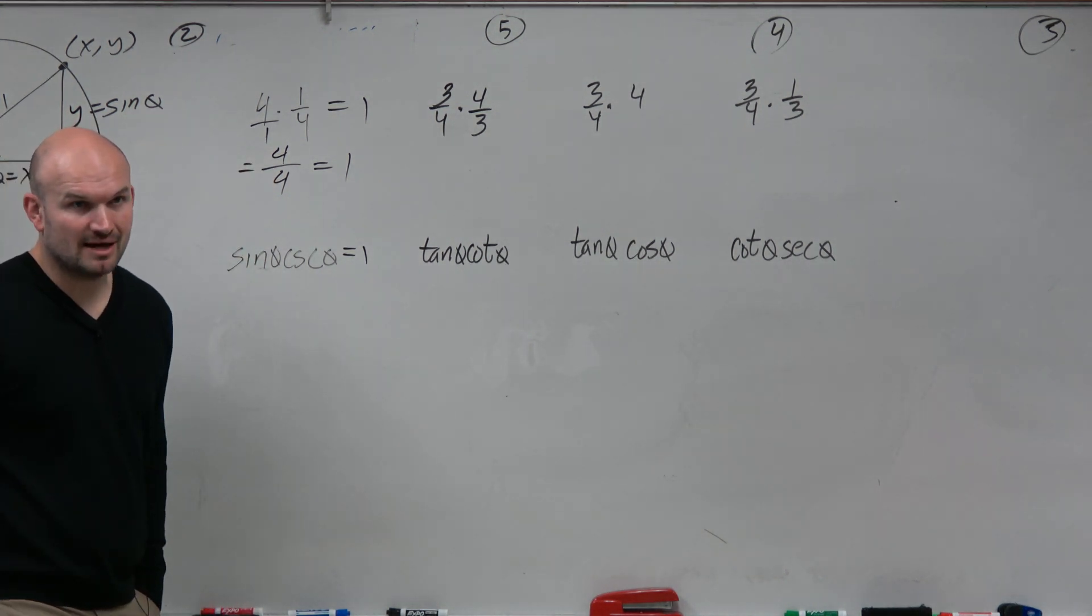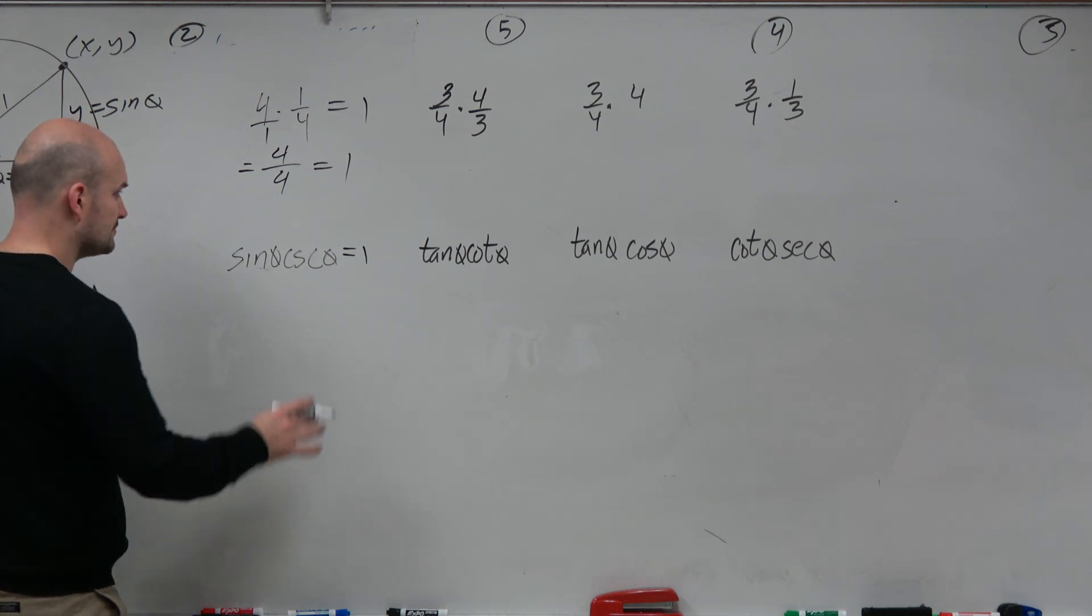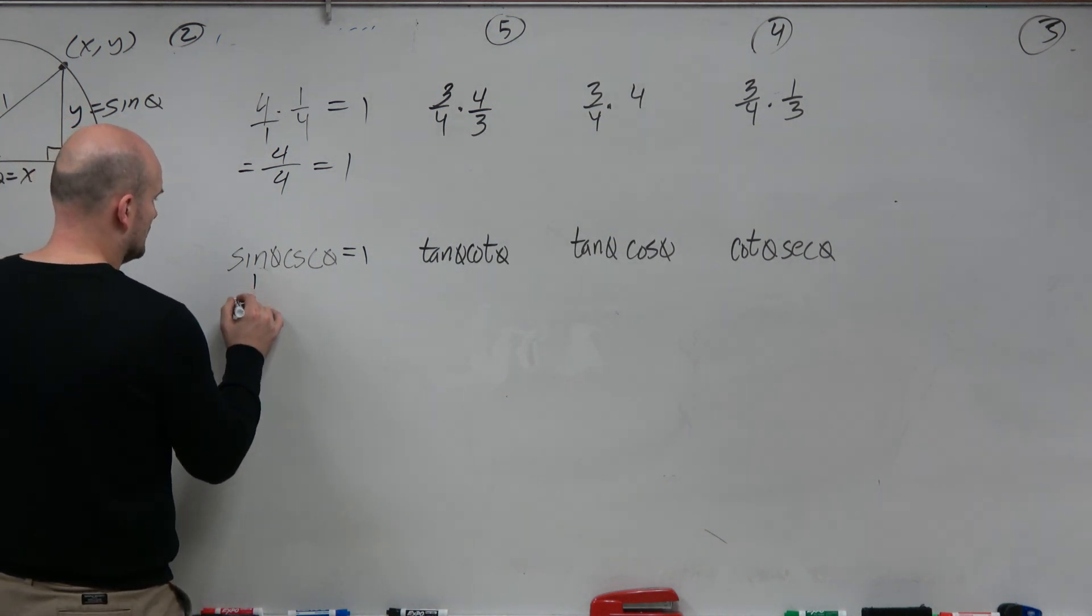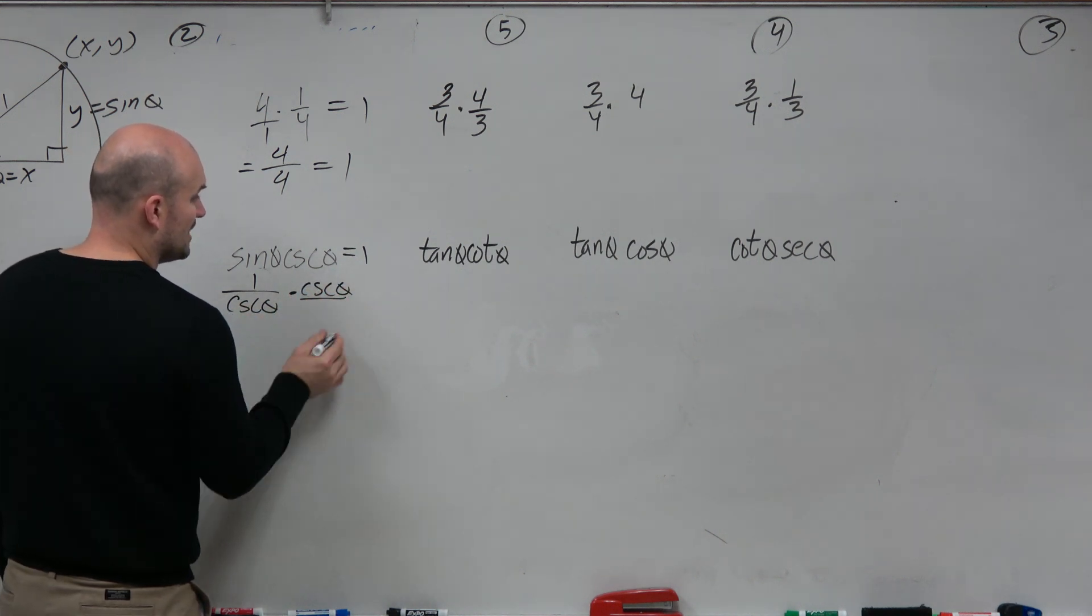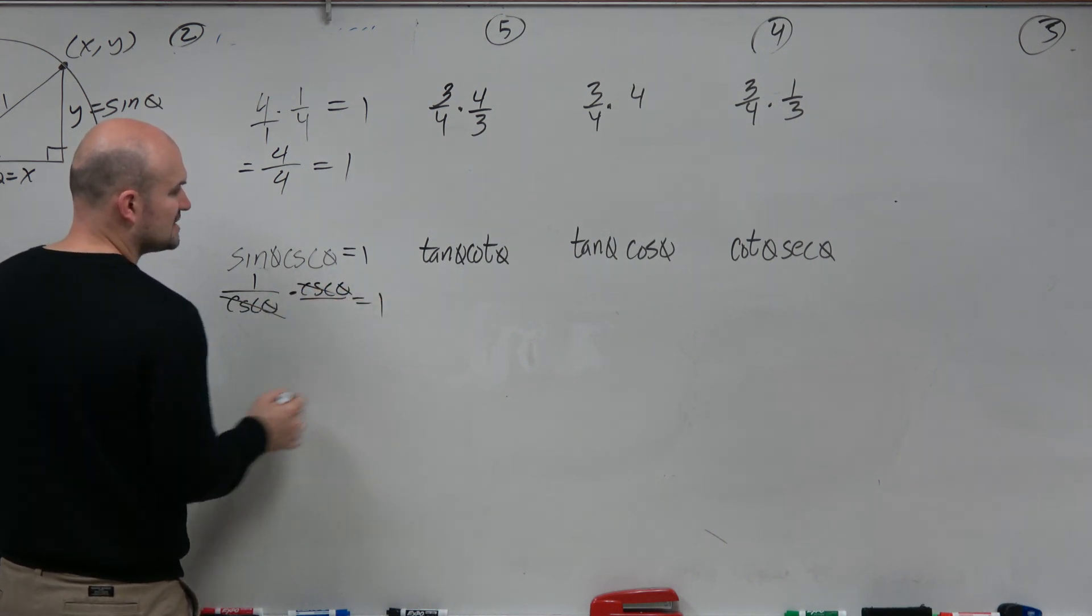But let's kind of go through some where people make mistakes. Some people say, well, I could rewrite this as 1 over cosecant times cosecant of theta. You're right.